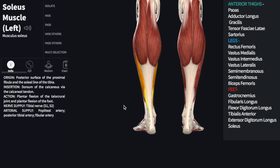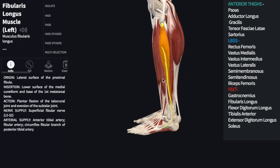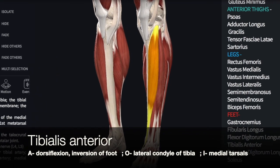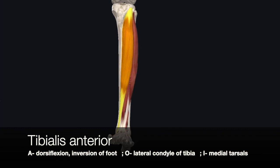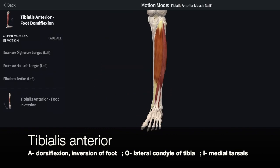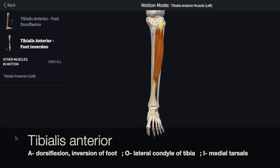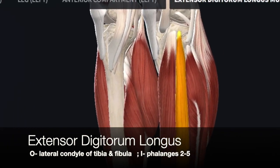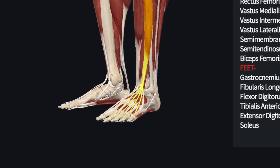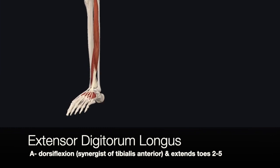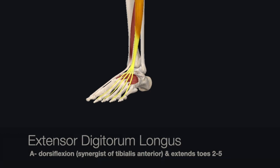The last group of muscles are those acting on the ankle and foot. Their origins are on the proximal ends of the fibula and tibia, and their insertion is on the tarsals, metatarsals, and phalanges of the foot. The tibialis anterior originates on the lateral condyle of the tibia and inserts into the medial metatarsal of the foot. It is involved in dorsiflexion and inversion of the foot. The extensor digitorum longus originates on the lateral condyle of the tibia and the proximal end of the fibula, and inserts into the phalanges of toes 2 through 5. It is a synergist of the tibialis anterior in dorsiflexion, and also extends toes 2 through 5.